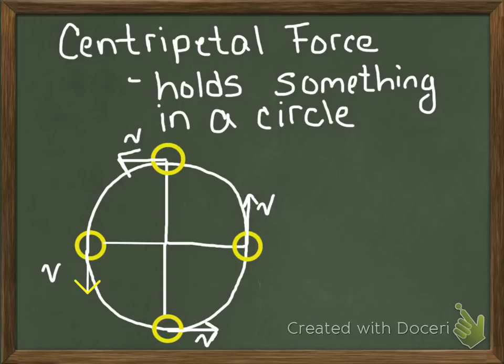So my velocity vector, the direction that my ball is moving, the ball is always moving along that outside line. And for those of you that have taken or remember your geometry, that's terrible.